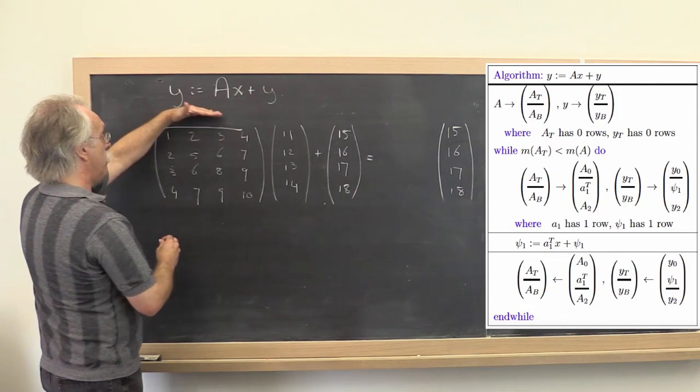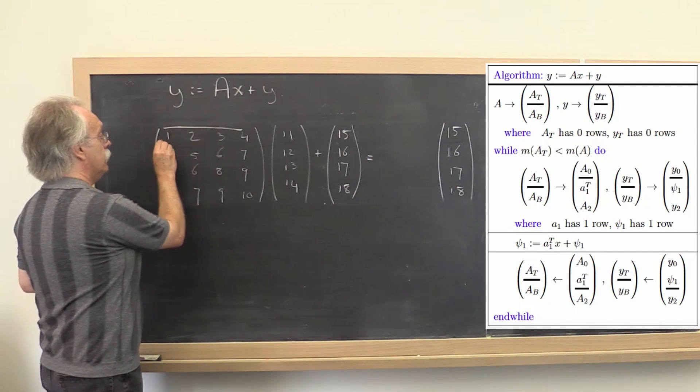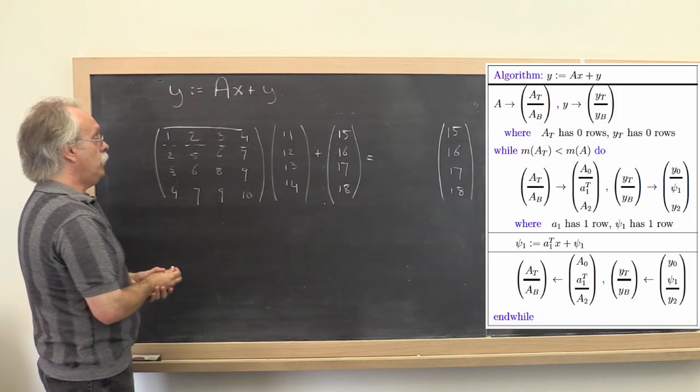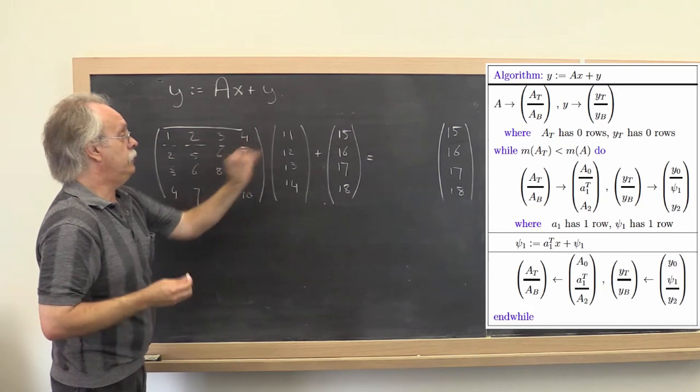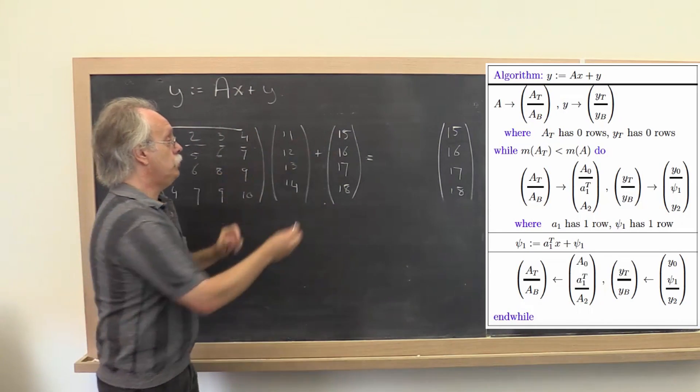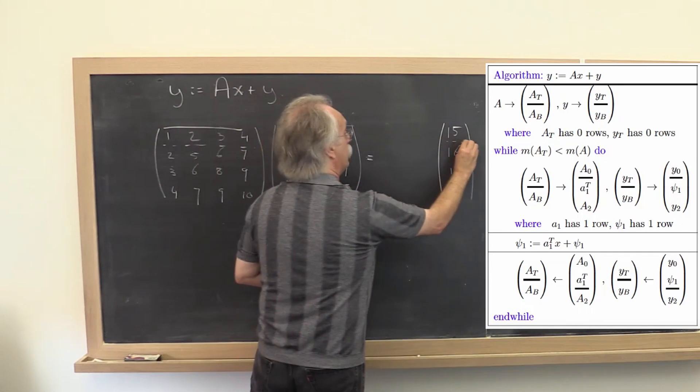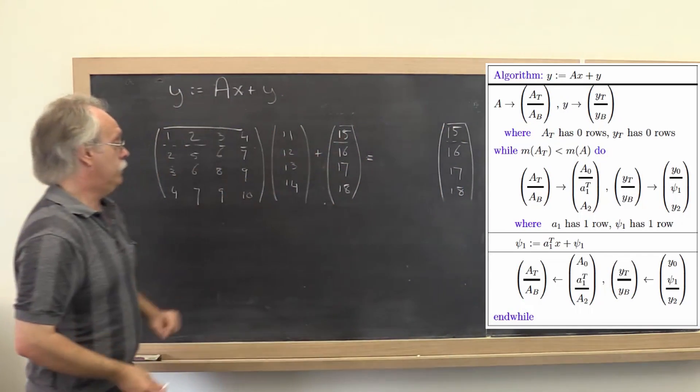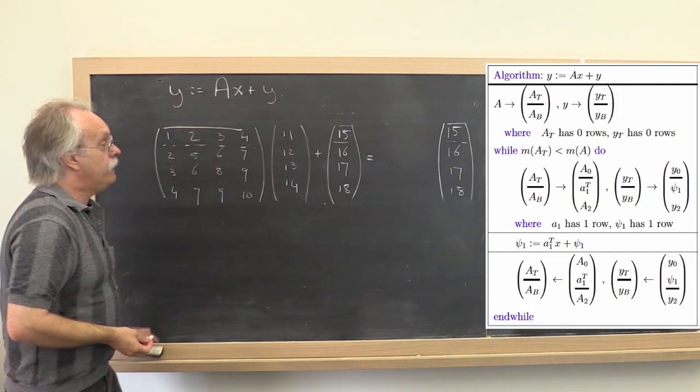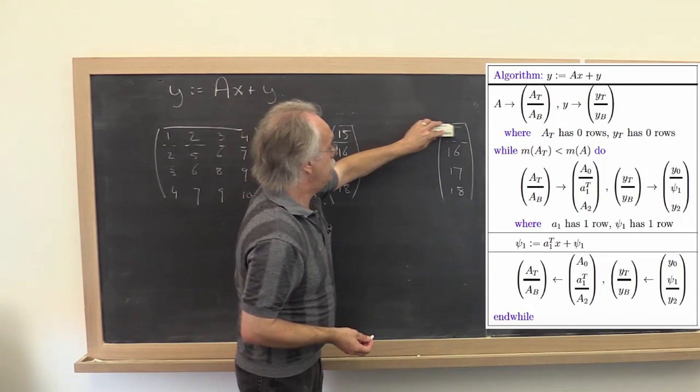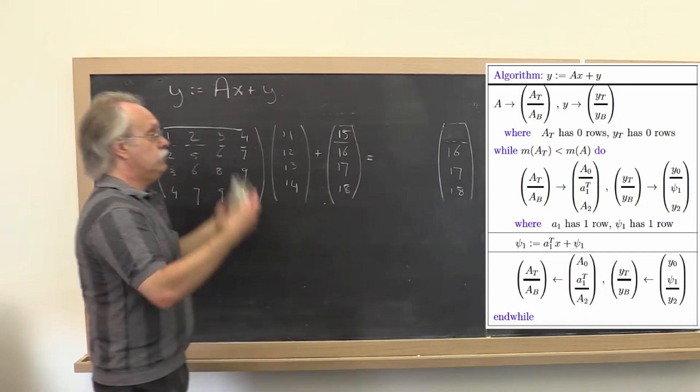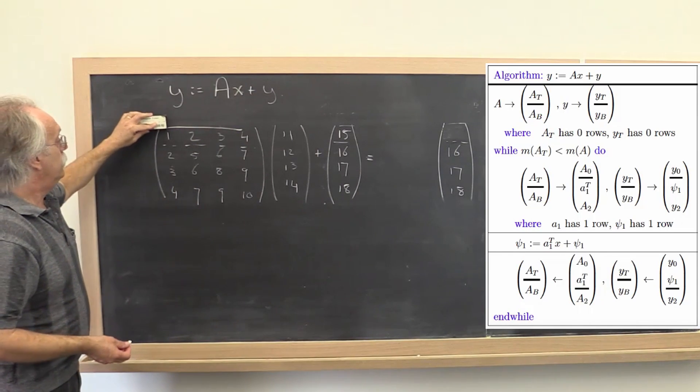Well, it would go and say there's a top part and the bottom part here. Let's identify the top row. Let's do an inner product adding to the current element of the vector, which then would change this element right here to something else. And then it would move on.